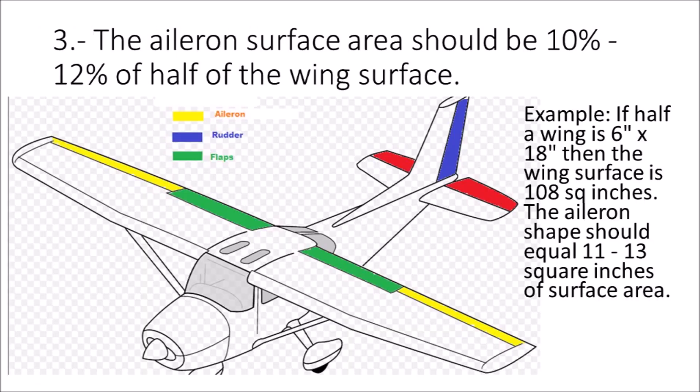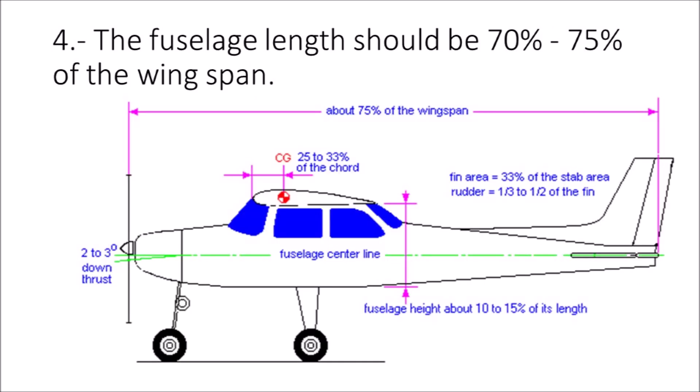The aileron surface area should be 10% to 12% of half of the wing surface area. The fuselage length should be 70% to 75% of the wingspan.